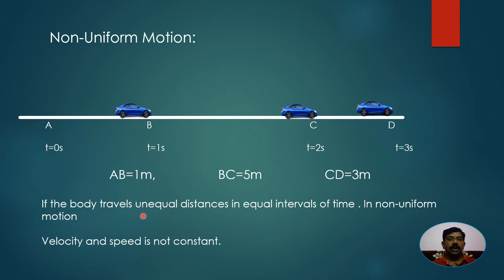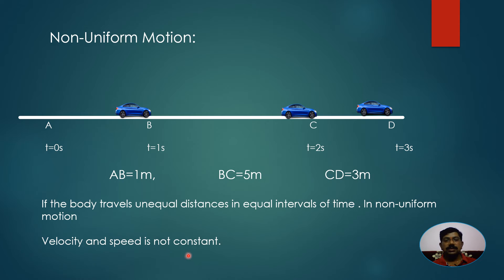If the body travels unequal distances in equal intervals of time, the body is said to be in non-uniform motion. In non-uniform motion, velocity and speed are not constant - they change. The vehicle or object moves unequal distances in equal intervals of time, so the speed of the car is changing.